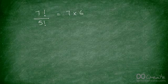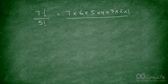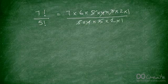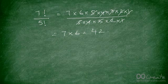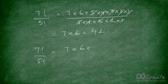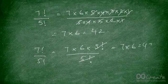You might get a question that asks you to simplify factorials. For example: what is seven factorial divided by five factorial? Seven factorial is seven times six times five times four times three times two times one, divided by five factorial. The five factorial terms cancel, leaving you with seven times six, which equals 42. Alternatively, write seven factorial as seven times six times five factorial, then cancel the five factorial to get seven times six, which is 42.